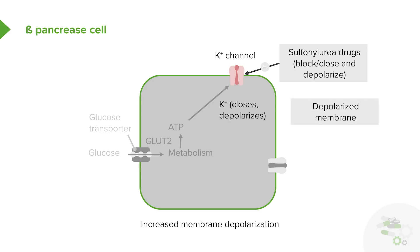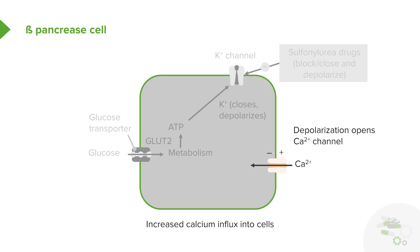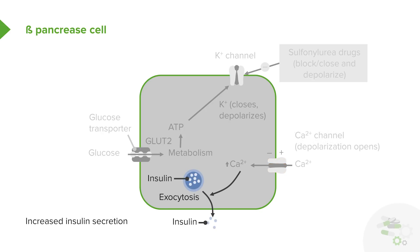When you have a depolarized membrane, you're going to have more calcium influx into that cell. The depolarization opens up that calcium channel and allows lots of calcium to move in. When you have more calcium inside the cell, those calcium ions can form bridges between the vesicles that contain insulin. So you have calcium-mediated exocytosis of insulin — more insulin secretion. Now, if your beta cells aren't working and you're not making insulin in the first place, secretagogues are not going to work.